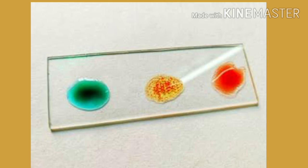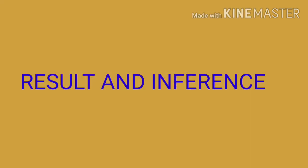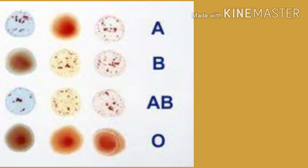In this slide we can see agglutination with the anti-B serum. For results: a person with A positive blood shows agglutination with anti-A serum and anti-RhD serum. A person with B positive blood shows agglutination with anti-B serum and anti-RhD serum. A person with AB positive blood shows agglutination with all three serums. A person with O negative blood group doesn't show agglutination with any serum.